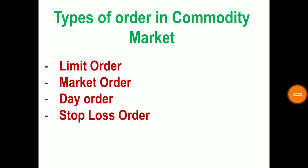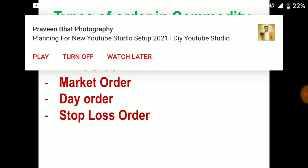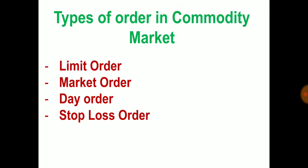The third order is the day order. This is also a common and popular order in the commodity market. This order is valid for only one day when it is placed. For example, if you place an order at a price of $13 and it is not executed before the end of the trading day, it will automatically be cancelled. You don't need to cancel it manually.